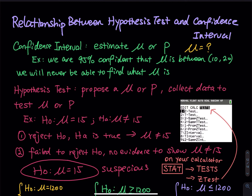What about hypothesis test? Hypothesis test is testing a number. In confidence interval you are guessing a number. In hypothesis test, you don't need to guess anymore — I am going to propose the number for you. I am going to give you what mu is, what p is, but there is no evidence or proof behind those statements. So your job is to collect data to test the statement I gave you.